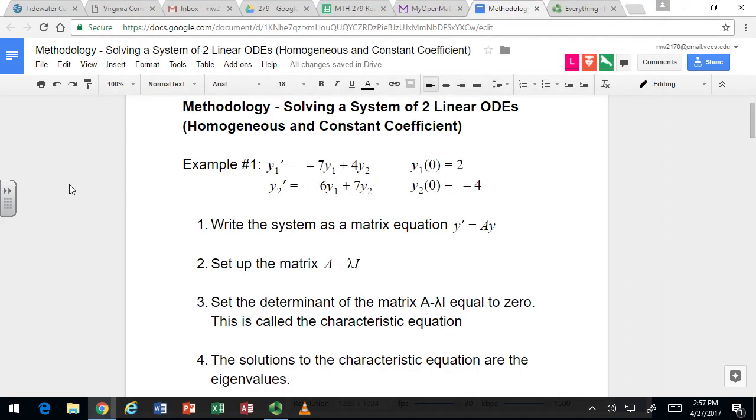So, welcome to our final methodology for the course, solving a system of two linear ODEs, homogeneous constant coefficient. We're going to start off with the written equation form. In our example, we have y₁' = -7y₁ + 4y₂, and y₂' = -6y₁ + 7y₂.